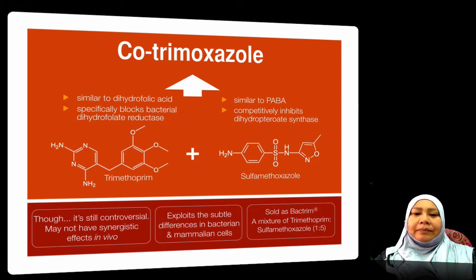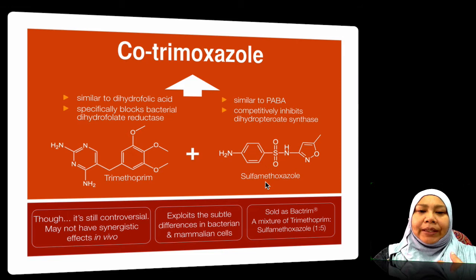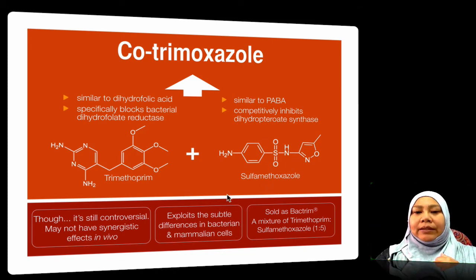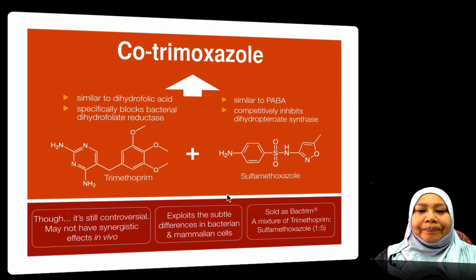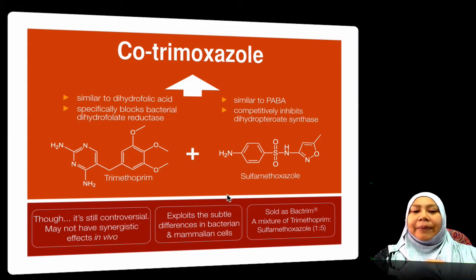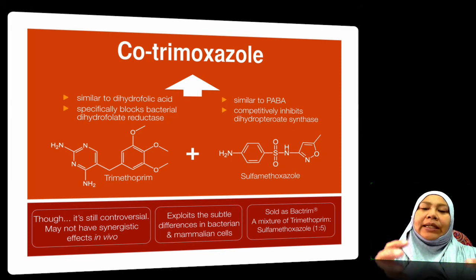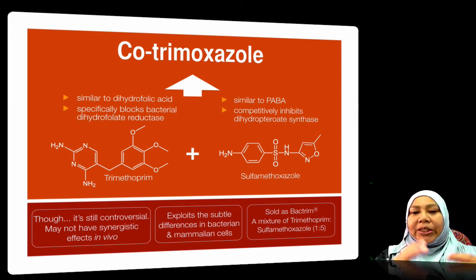In the market, both trimethoprim and sulfonamides are given together. One example is Co-Trimoxazole — a combination of trimethoprim with sulfamethoxazole. They have a synergistic effect in blocking the same biosynthesis pathway, exploiting the subtle differences between bacterial and mammalian cells. The brand name is Bactrim, and it is a mixture of trimethoprim and sulfamethoxazole in a ratio of 1 to 5.